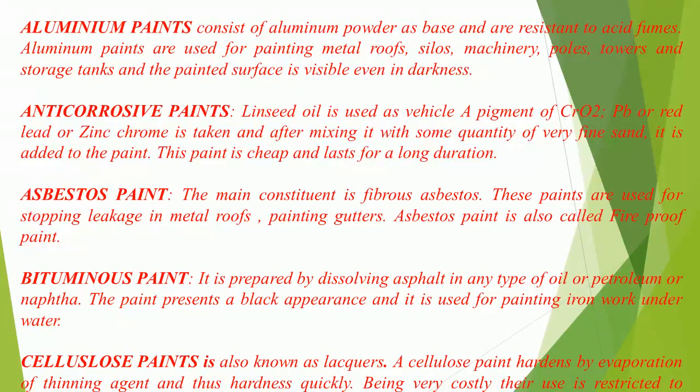Asbestos paint: The main constituent is fibrous asbestos. These paints are used for stopping leakage in metal roofs and painting gutters. Asbestos paint is also called fireproof paint. Bituminous paint is prepared by dissolving asphalt in any type of oil, petroleum, or naphtha. The paint presents a black appearance and is used for painting iron work underwater.